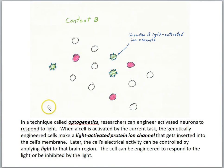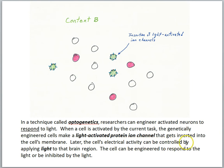In a technique called optogenetics, researchers can engineer activated neurons to respond to light. When a cell is activated by the current task, genetically engineered cells make a light-activated protein ion channel that gets inserted into the cell's membrane. Later, the cell's electrical activity can be controlled by applying light to that brain region — the cell can be engineered to be activated or inhibited by the light.